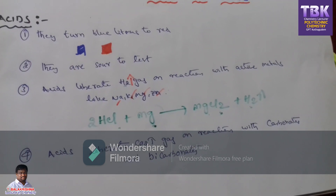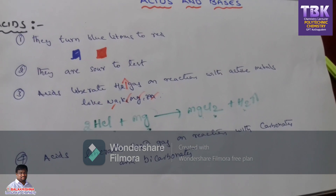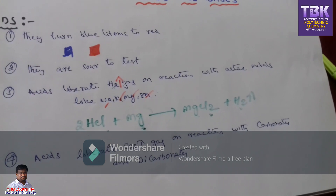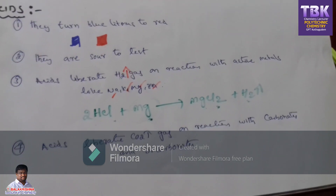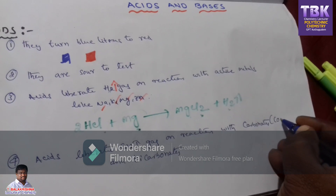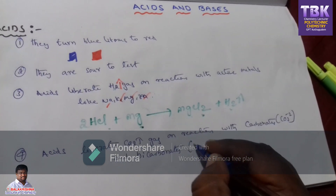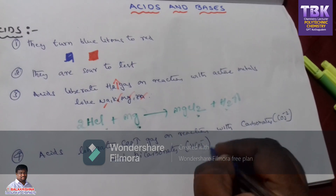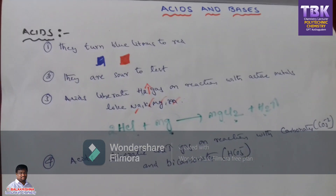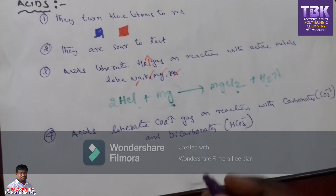The fourth point is acids liberate CO₂ gas on reaction with carbonates and bicarbonates. Carbonates means CO₃²⁻ and bicarbonates means HCO₃⁻. Acids react with carbonates and bicarbonates to produce CO₂ gas.